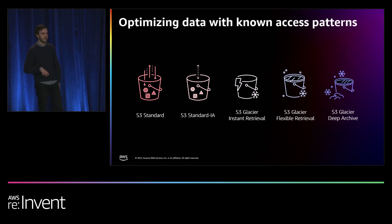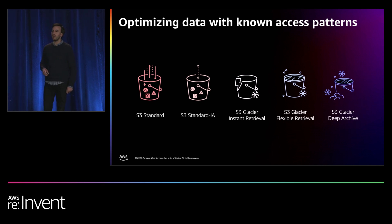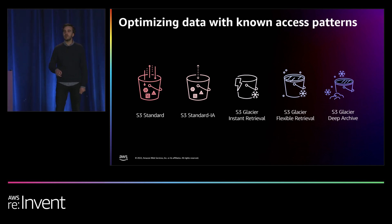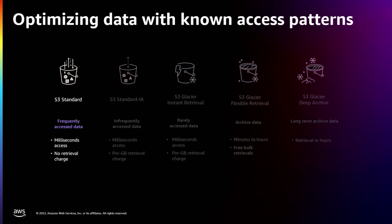To support these use cases, we have a number of storage classes for every imaginable use case. If you're streaming content and want to use S3 as the origin, that content is going to be frequently accessed by users around the globe. In that case, you should use S3 Standard, which is the cost-optimized ideal storage class for frequently accessed data — the best choice if you access your data more than once a month.